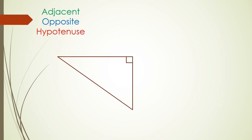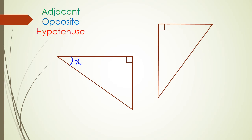I've given you two triangles here with angle X on each one. What I'd like you to do is pause the video, sketch this picture, and label the sides yourself to see whether you get it right or wrong. Pause right now.